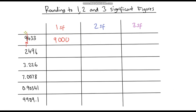Now we're going to round 9,433 to two significant figures. The 9 is our first significant figure and the 4 is our second significant figure. Just like before, we look at the digit to the right of the 4. Because that is less than 5, we round this down, so the result is 9,400.